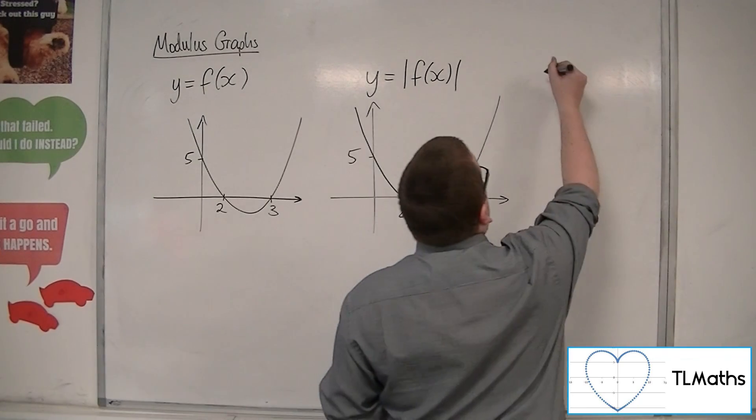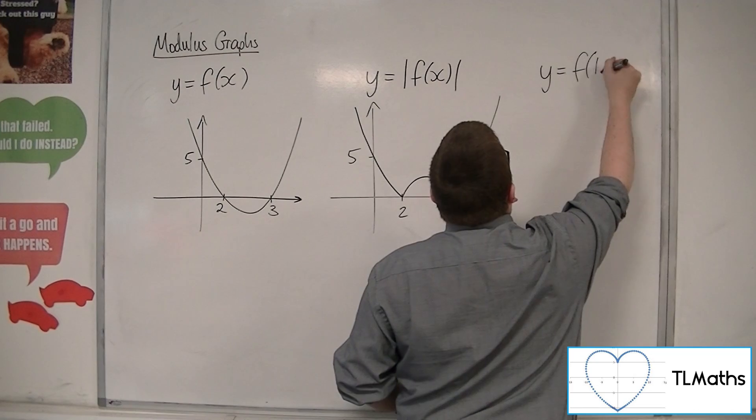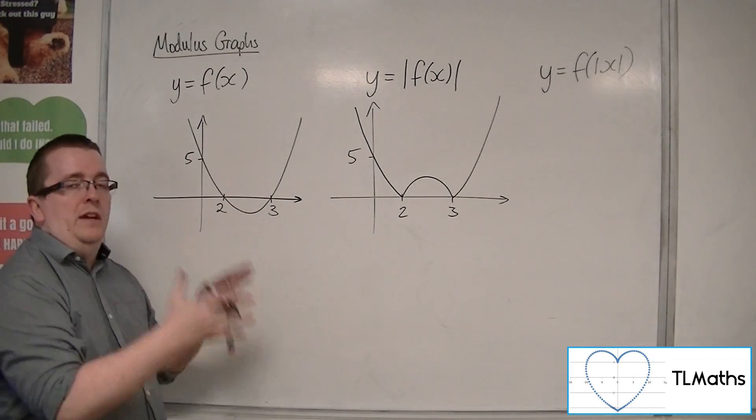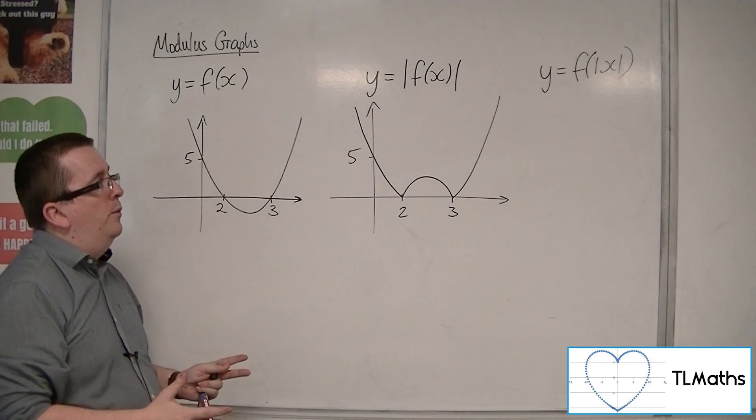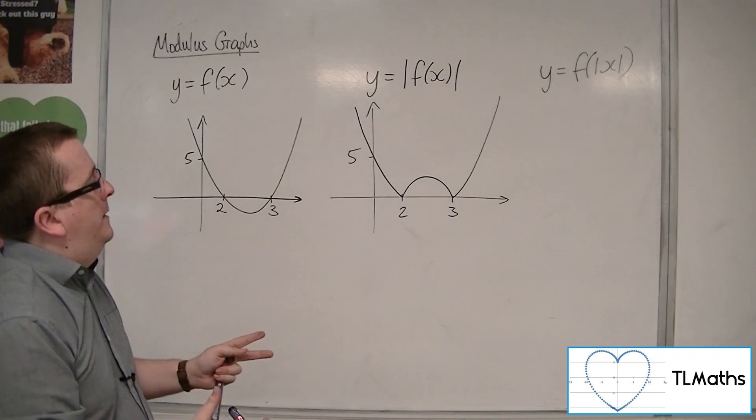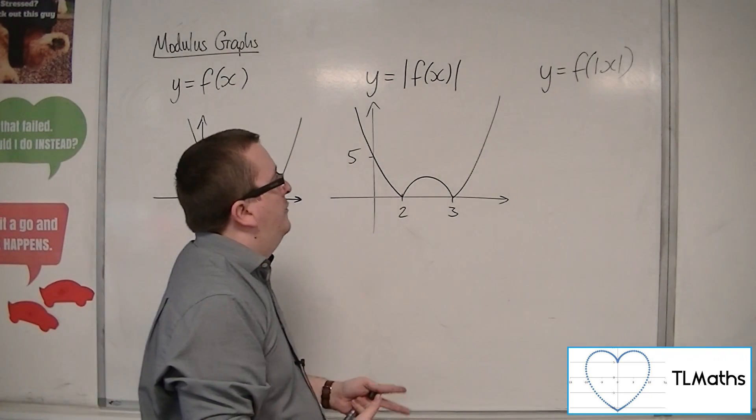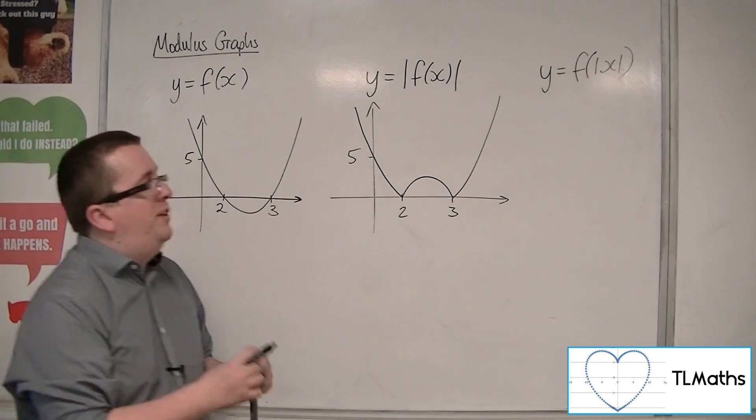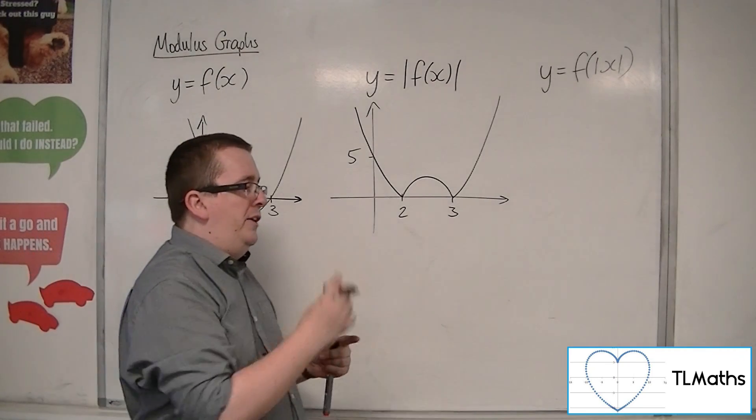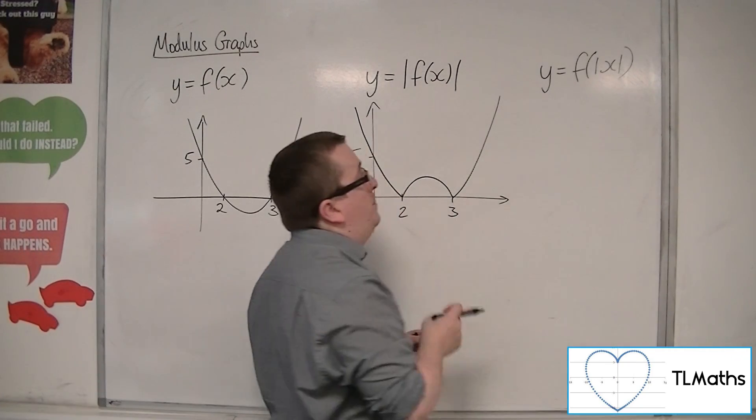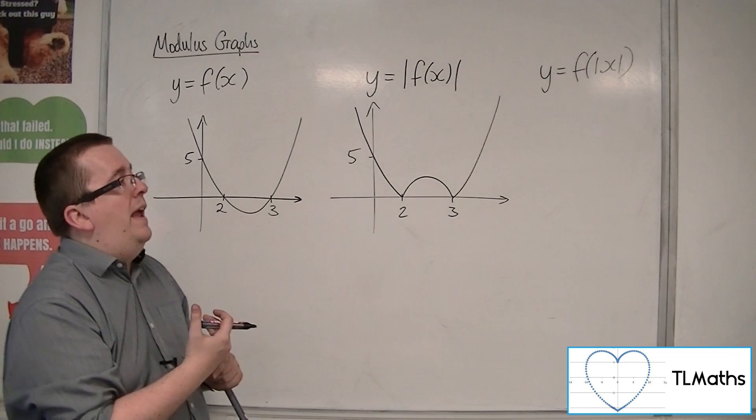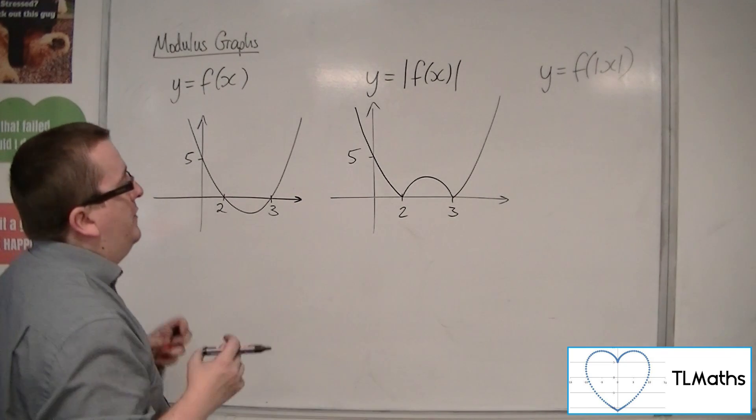Now the question is, what about y equals f of mod x? What happens if I just replace the x with mod x? The modular sign is not around the whole thing now. What that would mean is I would have a graph that when I'm substituting in values of x into the graph, some of them are positive, in which case this graph would be unchanged, but when I'm substituting in negative values, then I'm getting the positive equivalent.